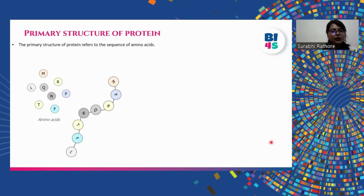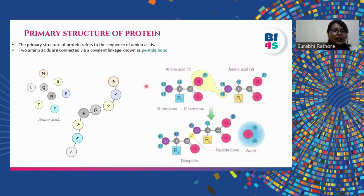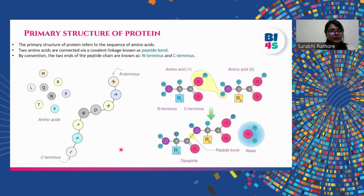The primary structure of a protein is a linear sequence of amino acids. Now how are two amino acids connected? The two amino acids are connected via a covalent linkage known as peptide bond. The carboxyl group of one amino acid interacts with the amino group of another to form a peptide bond. In this process, a water molecule is released and this linked series of carbon, nitrogen, and oxygen make up the protein backbone where the two ends of the chains are referred to as the N-terminus and the C-terminus.